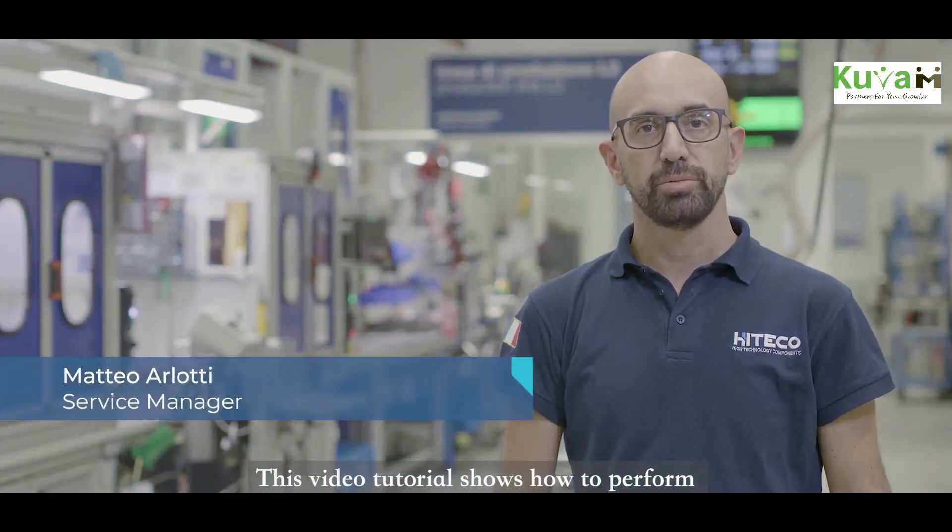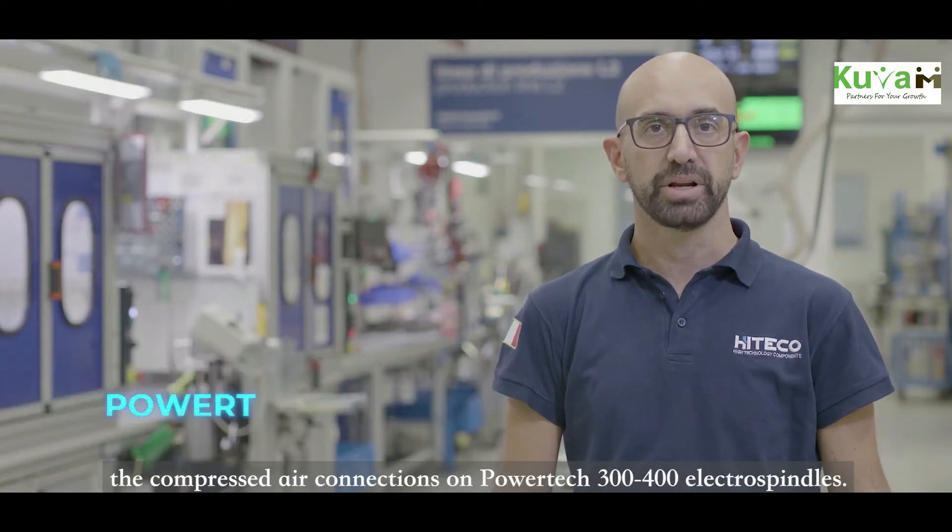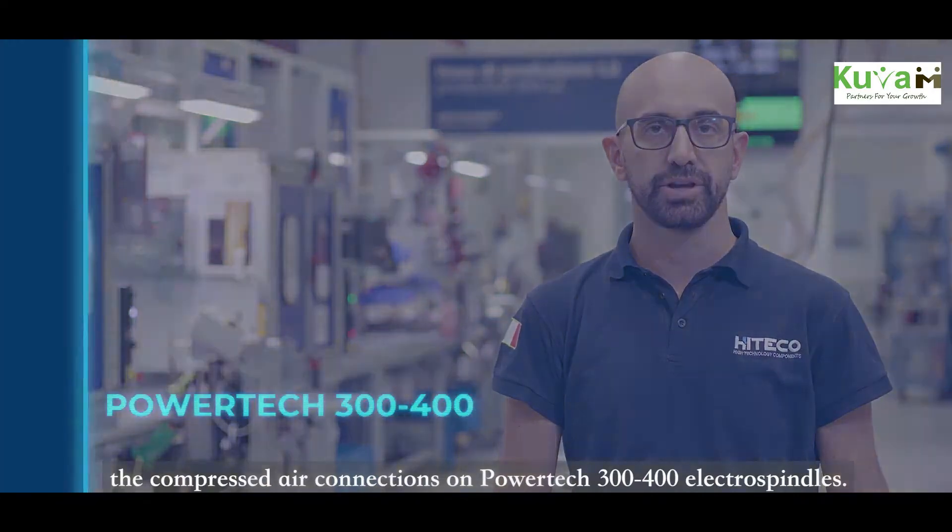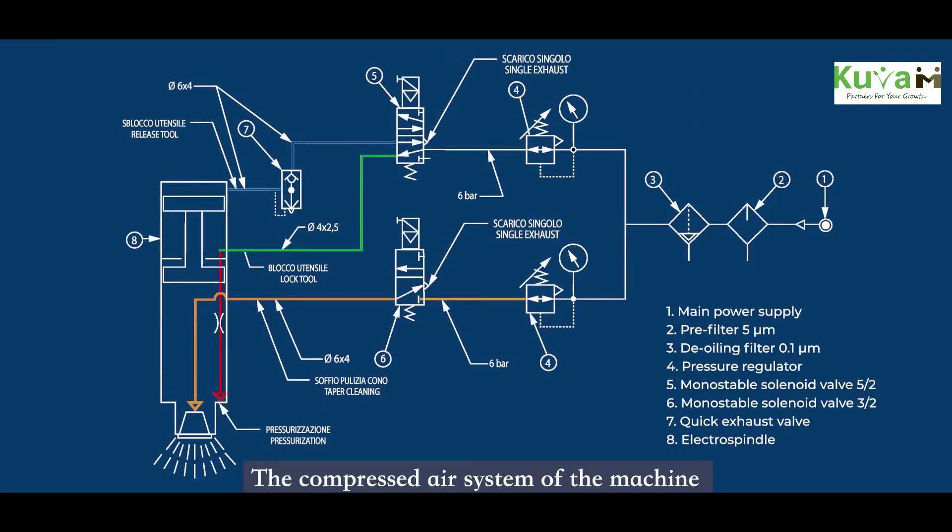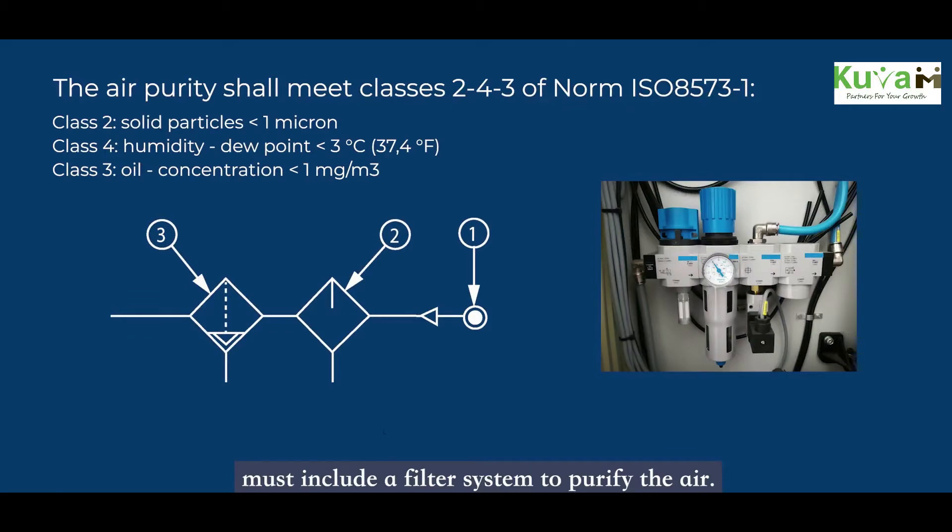This video tutorial shows how to perform the compressed air connections on Powertech 300-400 electro spindle. The compressed air system of the machine must include a filter system to purify the air.